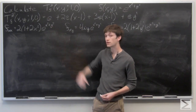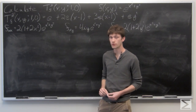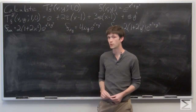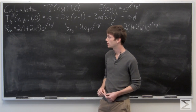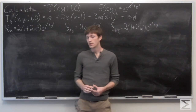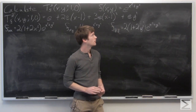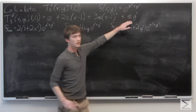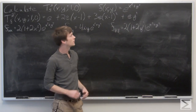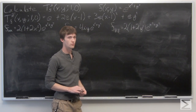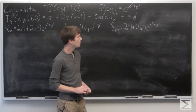In this problem, we're asked to calculate the third order Taylor polynomial of f(x,y) around the point (1,0). We're given that f(x,y) is the function e to the x squared plus y squared.